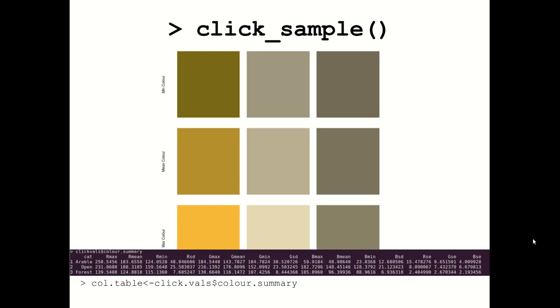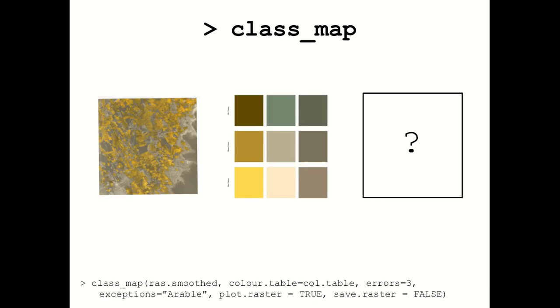The function also creates a table with the actual values — the maximum, minimum, mean, standard deviation, and standard error of the R, G, and B values for each land use category. That's what we actually need for the next function, so we assign it to its own object.